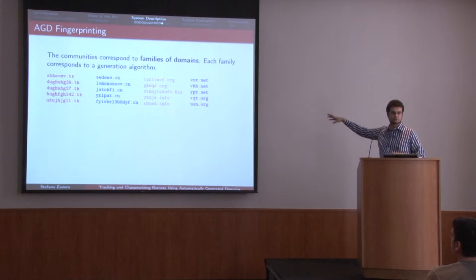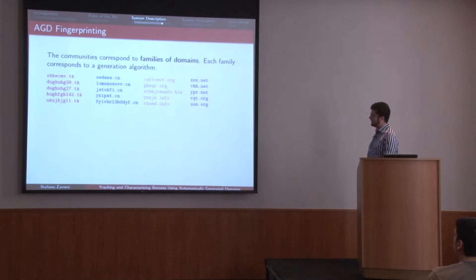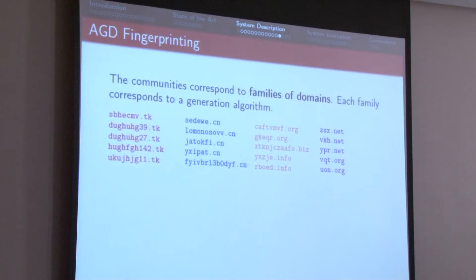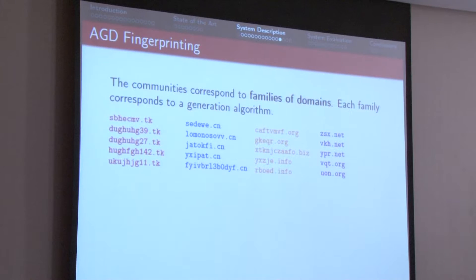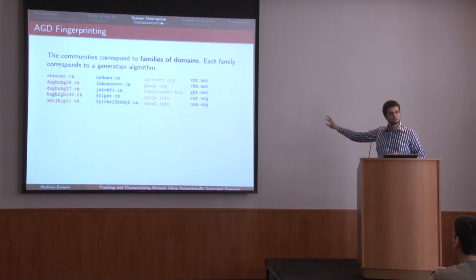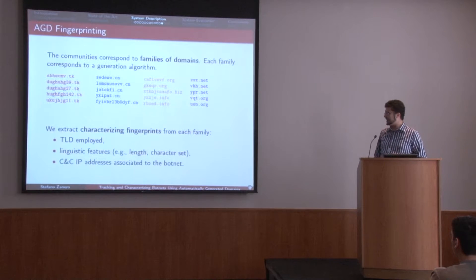When I have generated these clusters — so these are four real clusters got out of automatically collected data — you can already see, if you look at them as humans, that they have some characteristics. You could almost write a rule for matching those domains. So what we did is extract and characterize fingerprints of those domains: the top-level domain, some linguistic features, the length, the character set — because those are the typical features that define a specific algorithm — and the IP addresses correlated to that botnet.